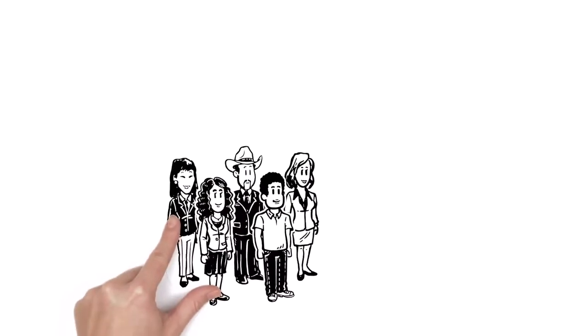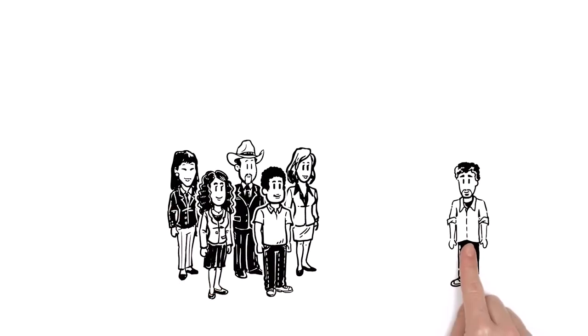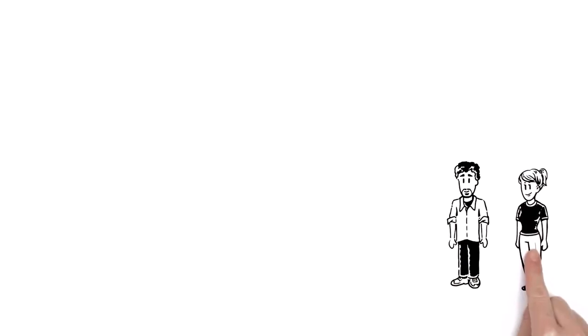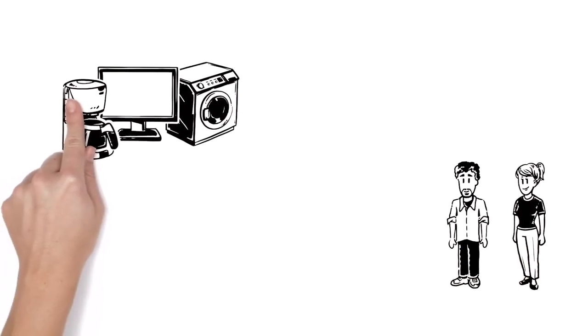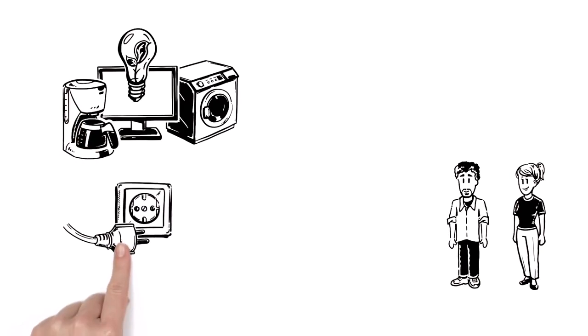It starts with everyone individually, even Tom. But what exactly can he do? Thanks to Mary, Tom chooses energy-saving electronic devices and unplugs them after use.